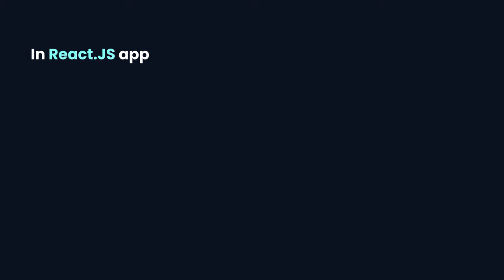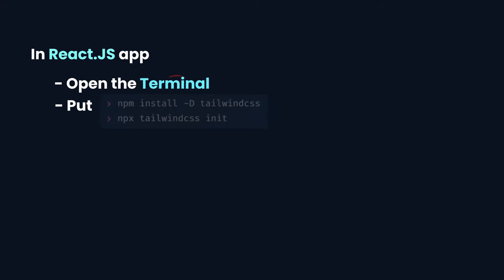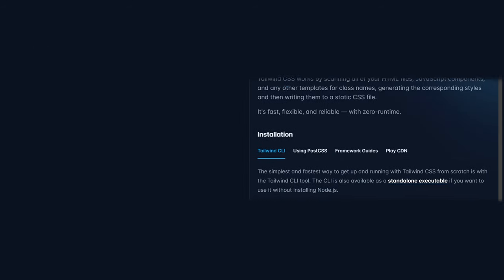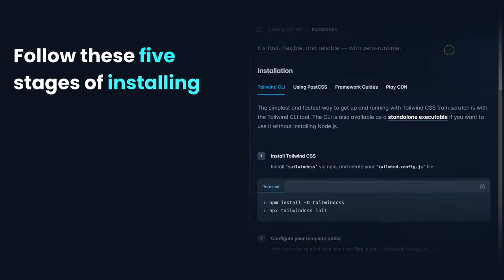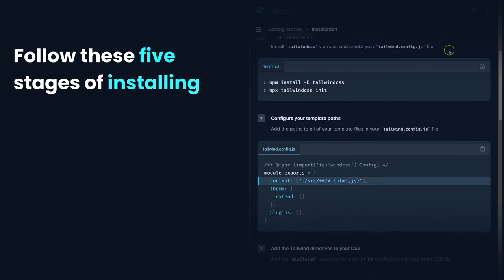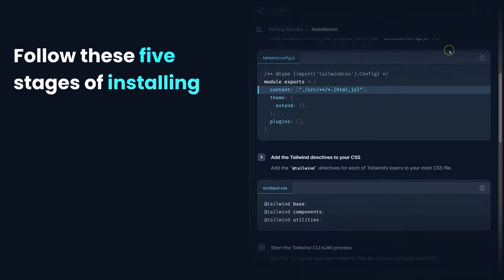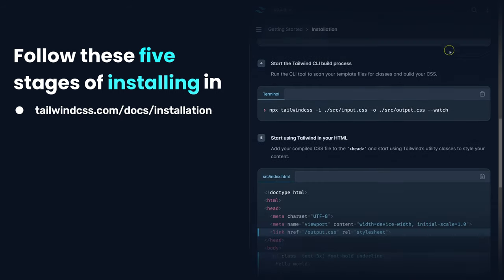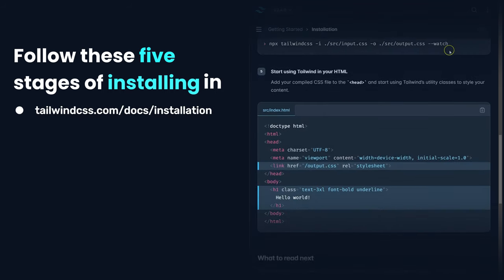According to installation in your React app, open the terminal and then put these commands, clicking Enter at the end. Or follow these five stages of installing in just an HTML project, which you can see on the official Tailwind CSS website under installations.